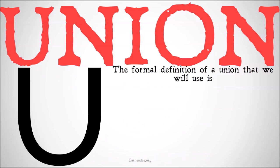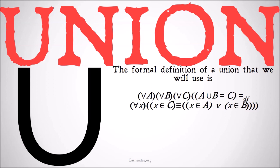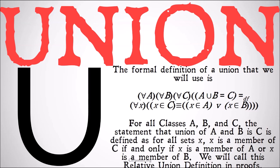Hopefully that's clear with those examples. Now the formal definition of a union that we're going to use is: for all A, all B, and all C, A∪B = C means by definition, for all sets X, X is a member of C is materially equivalent to X is a member of A or X is a member of B. We're going to call this the relative union definition in proofs.